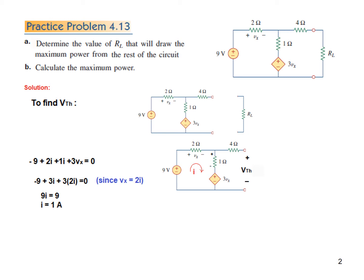Now we need to find Vthevenin, so we write KVL in this second loop. Starting from the bottom: minus 3Vx plus 1 times I — since there is no second current, only I — plus 0 volts plus Vthevenin equals 0. Plugging in Vx equals 2I and I equals 1, we solve and find Vthevenin equals 7 volts.